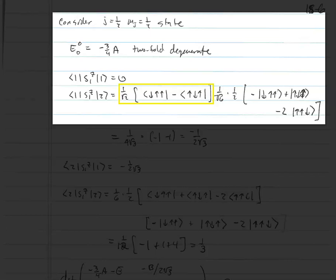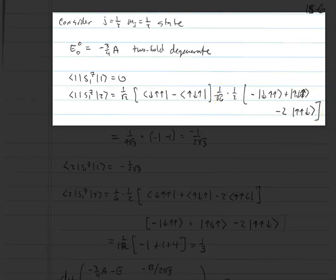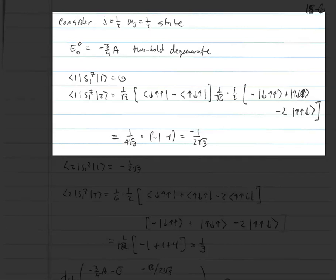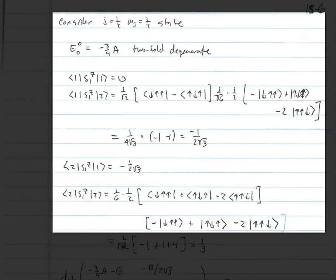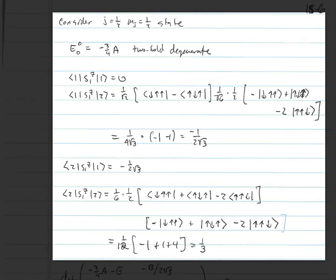For the off-diagonal element ⟨1|S1z|2⟩: state 1 is (1/√2)(|↓↑↑⟩ − |↑↓↑⟩) and state 2 is (1/√6)(|↓↑↑⟩ + |↑↓↑⟩ − 2|↑↑↓⟩). After applying S1z and taking the inner product — the |↓↑↑⟩ term gives −1/2 and the |↑↓↑⟩ term gives +1/2 with sign flip — the net contribution, with prefactor 1/(4√3), gives −1/(2√3). By Hermiticity, ⟨2|S1z|1⟩ equals the same. For ⟨2|S1z|2⟩, working through gives a net of 1/3.